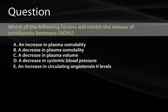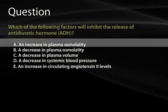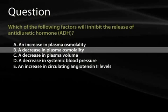Question: Which of the following factors will inhibit the release of antidiuretic hormone? A) An increase in plasma osmolality, B) A decrease in plasma osmolality, C) A decrease in plasma volume, D) A decrease in systemic blood pressure, E) An increase in circulating angiotensin 2 levels. The correct answer is B — a decrease in plasma osmolality. All other scenarios are situations where ADH activity will be stimulated.